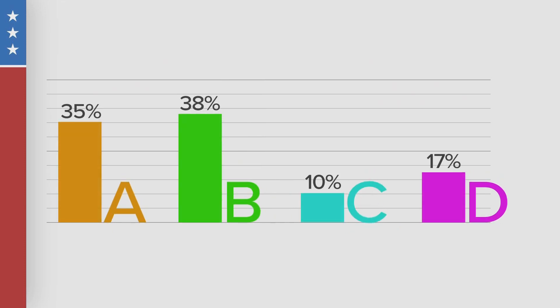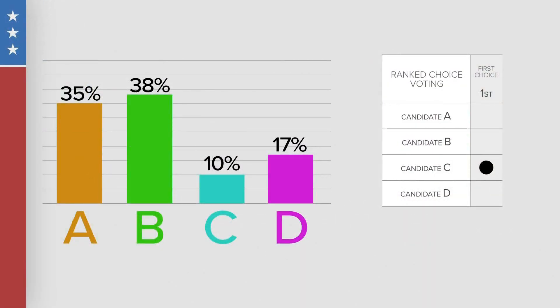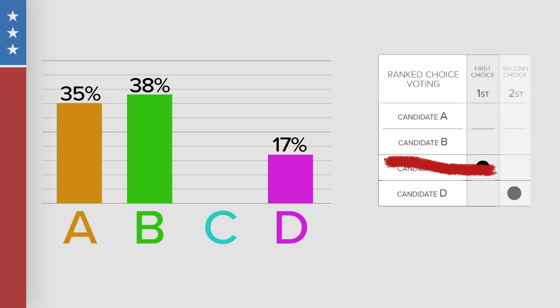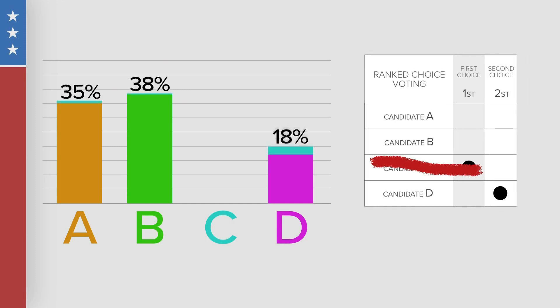Or it could look like this — no candidate has more than 50% of the vote, which means we go to round two. The first thing we do is eliminate the least voted for candidate in the race; in this case, candidate C. The votes are now tabulated again, but this time we count the backup candidates for voters who ranked C first. It looks like the majority of C supporters prefer candidate D as their second pick, but a candidate isn't over 50% yet, so we go to round three.